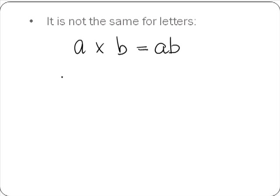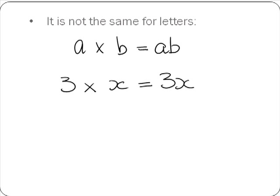Similarly, if we want to multiply a number by a letter — so 3 by x — we drop the multiplication sign and write the numbers and letters together, so we get 3x. Be careful when you are writing your x's; try and do them like this so that they don't look like the multiplication sign.